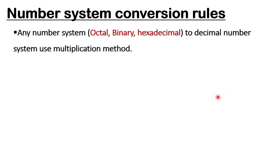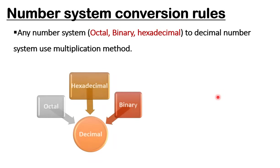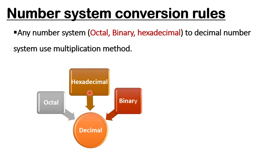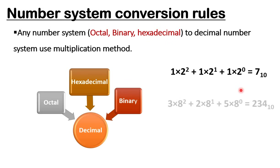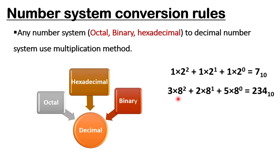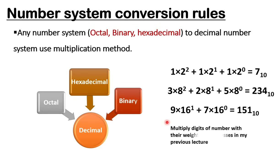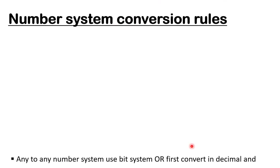The second rule: if you want to convert any number — octal, binary, or hexadecimal — to decimal, you use the multiplication method. For example, to convert a binary number to decimal, you multiply each binary digit by its corresponding power of 2. The same applies for octal to decimal (multiply by powers of 8) and hexadecimal to decimal (multiply by powers of 16). Multiply the digits of the number by their weights as discussed in the previous lecture.